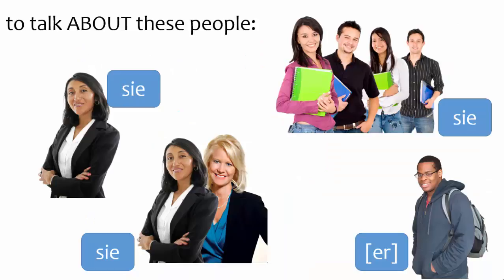To wrap up, the lowercase Z is a third-person pronoun. Third-person pronouns are used to talk about people. Lowercase z can be used in the third-person singular, corresponding to English she, where it's used to talk about one female or to talk about a feminine noun. Lowercase z is also used in the third-person plural, corresponding to English they, where it's used to talk about multiple people or plural nouns.